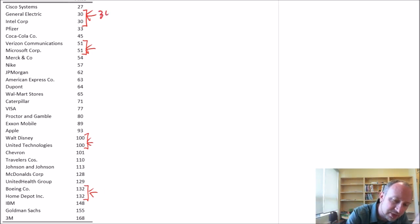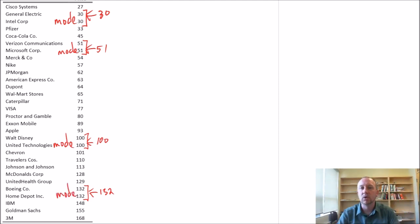So these values—30, 51, 100, and 132—those are all my modes. So there's one mode, two modes. This data set is what we would call multimodal. It has multiple observations that repeat at the same frequency, more than any others. So there's our mode.